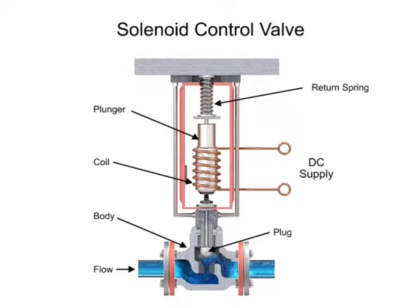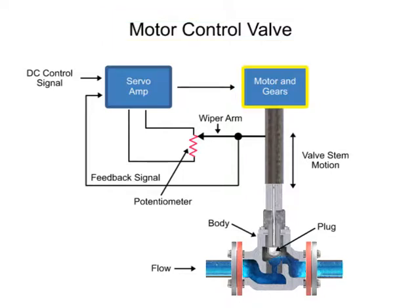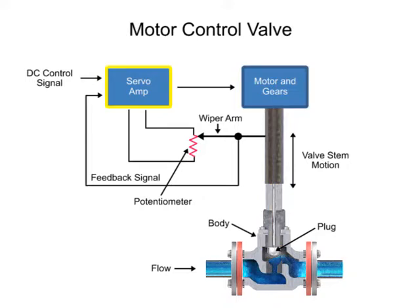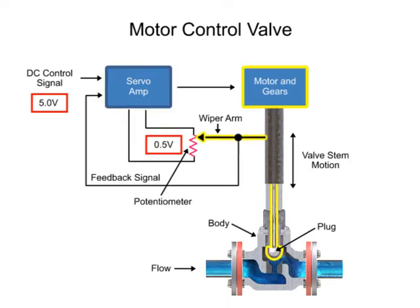Another method for variable valve positioning uses a motor and is referred to as proportional control mode. Using a gear motor attached to the valve stem, a servo amplifier provides a DC control signal that moves the valve to the desired position. Feedback is achieved with a wiper arm attached to the valve stem that sends a signal back to the servo amplifier where the position is monitored. The servo amplifier drives the motor until the control signal is equal to the feedback signal.